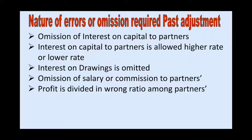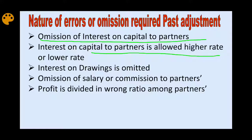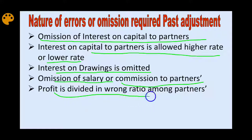The types of errors that arise in past adjustment include: omission of interest on capital to partners, interest on drawings charged at a higher or lower rate, omission of salary or commission to a partner, or profit distributed in the wrong ratio among partners.